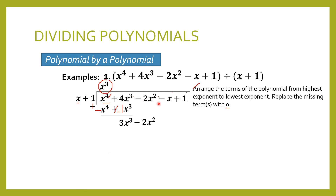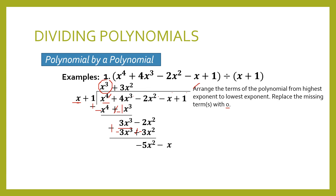Then we divide 3x cubed divided by x, which equals 3x squared. We multiply 3x squared times x to get 3x cubed, and 3x squared times 1 equals positive 3x squared. We subtract by changing to addition and changing signs to negative. The result is negative 5x squared. We bring down the next term, which is negative x. Now we divide negative 5x squared by x, and the result is negative 5x.